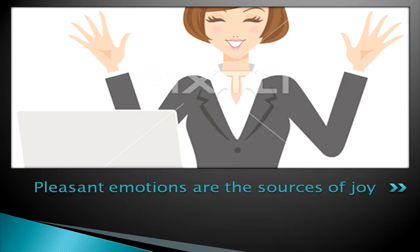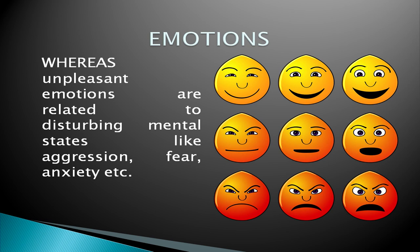Emotions may be pleasant or unpleasant. Pleasant emotions are a source of joy, whereas unpleasant emotions are related to disturbing mental states like aggression, fear, anxiety, etc. When we talk about emotions, we must know that each emotion has three basic aspects.